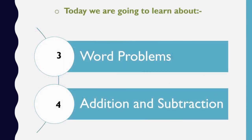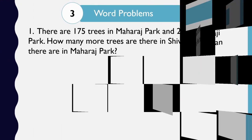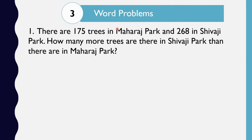Today we are going to learn about word problems in addition and subtraction. Here is the next word problem: There are 175 trees in Maharaj Park and 268 in Shivaji Park. How many more trees are there in Shivaji Park than in Maharaj Park?